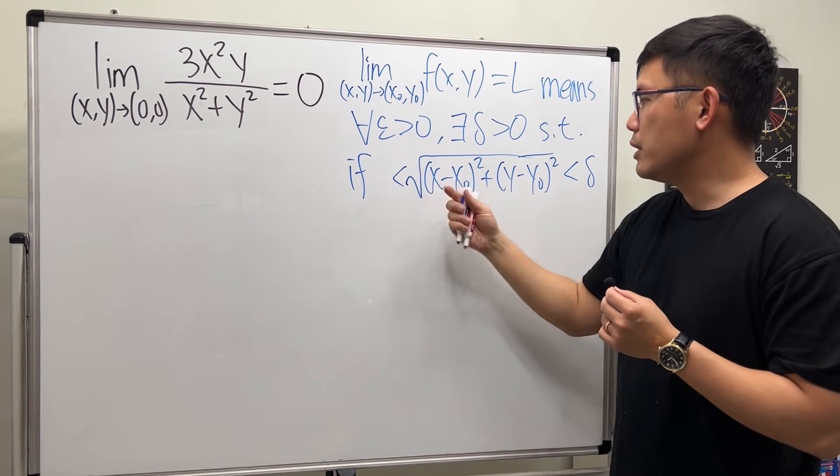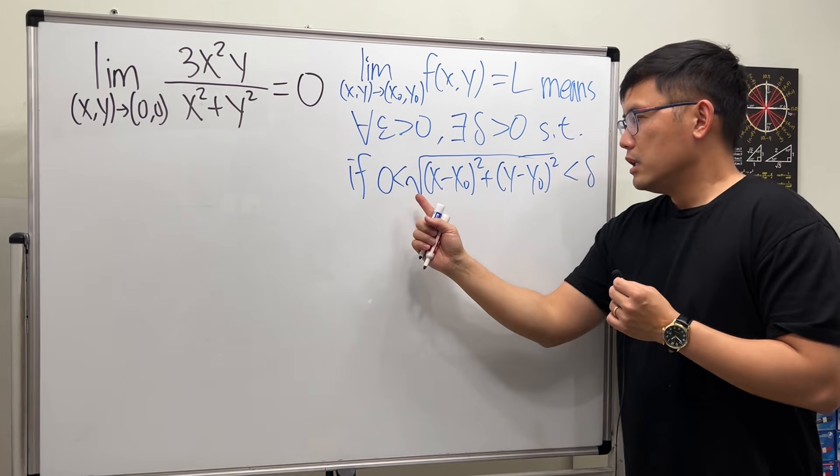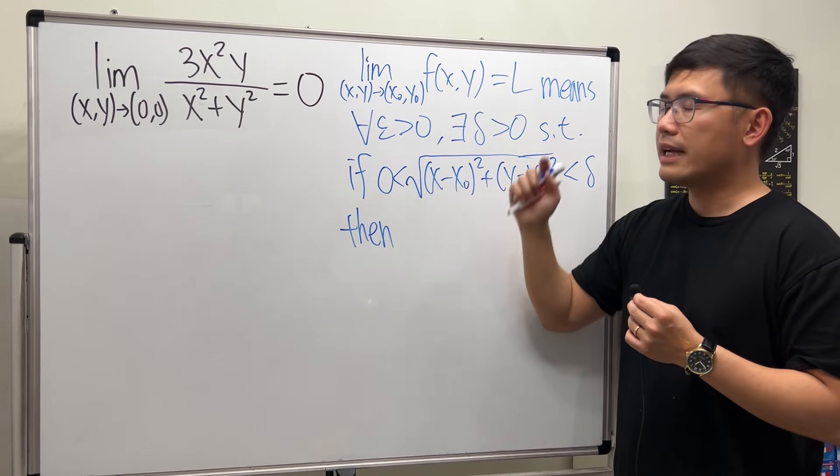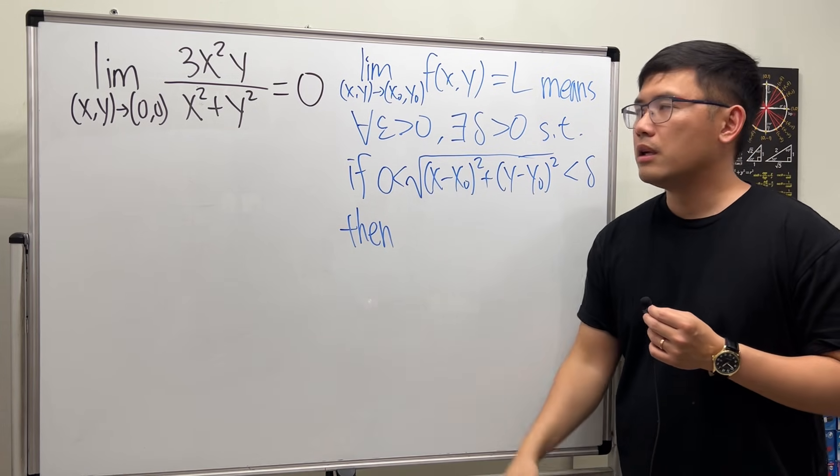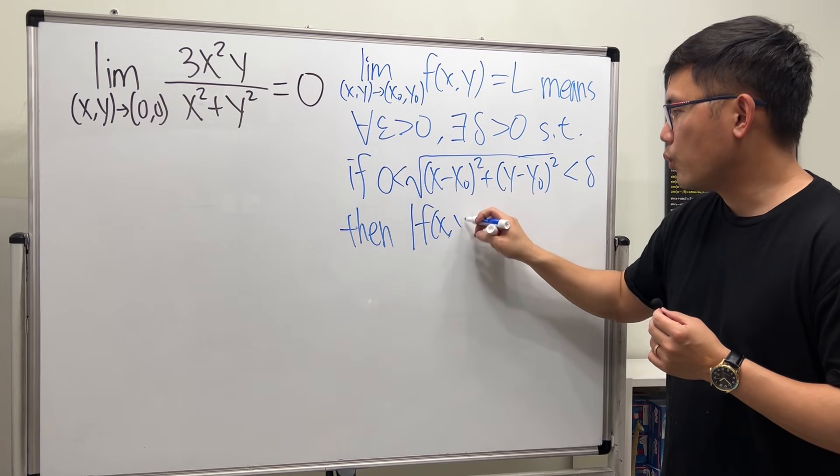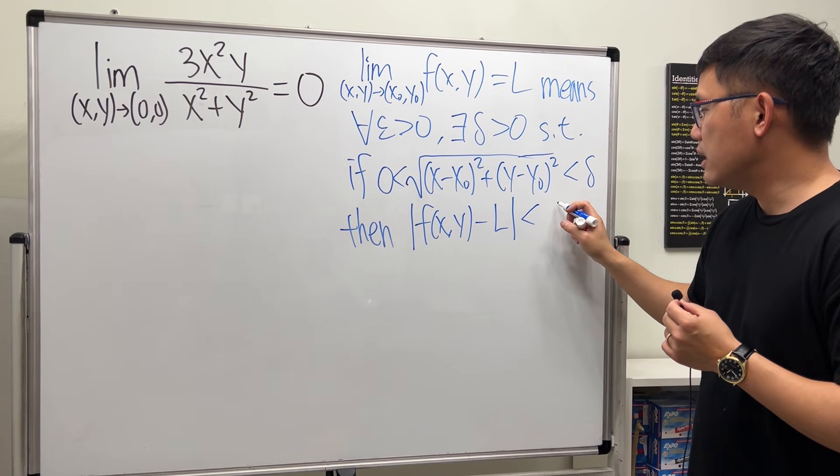If the distance is less than delta, and in the meantime, we don't want (x,y) to be the same as (x0,y0), so let's make sure that the distance is greater than 0. If this is true, then the distance between this and that is less than epsilon. But this is a number, so we use absolute value. And we have |f(x,y) - L|, this right here, less than epsilon.